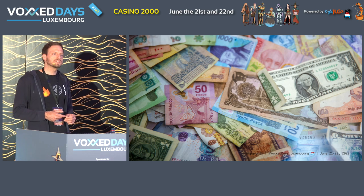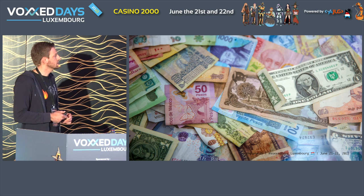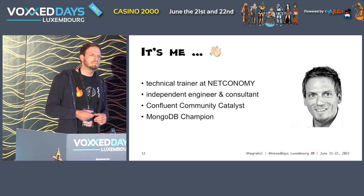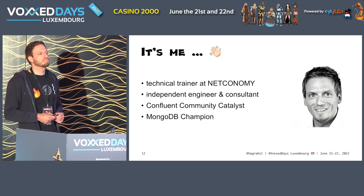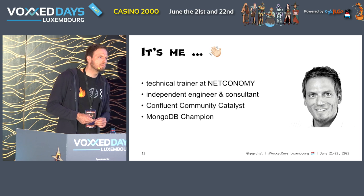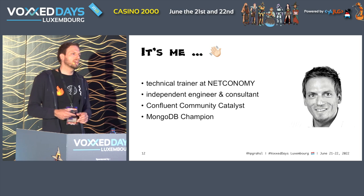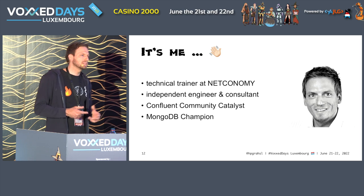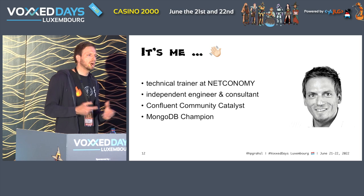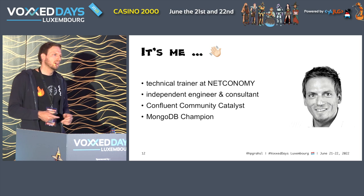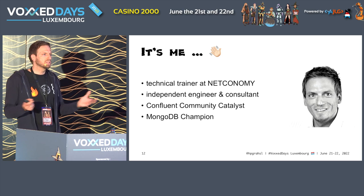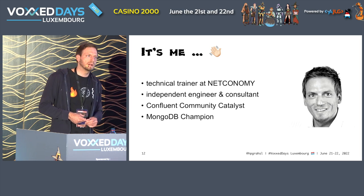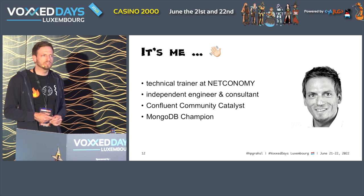Before we switch context to how we can mitigate the risk of data breaches in Kafka Connect-based scenarios, let me briefly introduce myself. My name is Hans-Peter, I'm based in Graz, Austria. In my day job I'm a part-time technical trainer at Netconomy, where we build large e-commerce solutions for a global customer base. I also work as an independent engineer and consultant helping customers build event-driven architectures on top of Apache Kafka, combined with NoSQL data stores such as MongoDB.